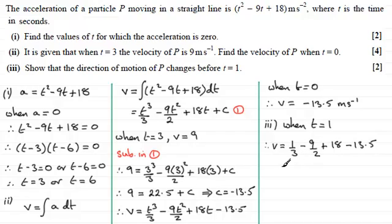And if you work this out, what you get is 1 third of a meter per second, a positive value. So you can see that it has changed direction before t equals 1. Because when t equals 0, it was going in the negative sense. And then when t equals 1, it's going in the positive sense. So it's clearly changed direction.